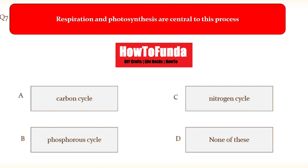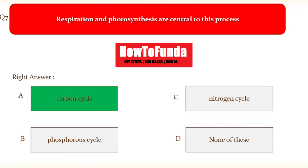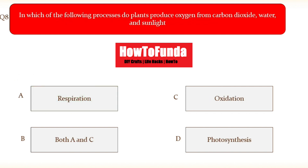Question number seven: respiration and photosynthesis are central to this process. The options are option A carbon cycle, option B phosphorus cycle, option C nitrogen cycle, option D none of these. The correct answer is the carbon cycle — respiration and photosynthesis are central to the carbon cycle.